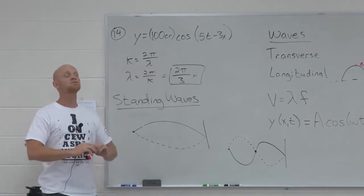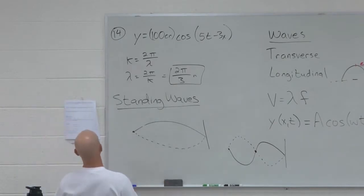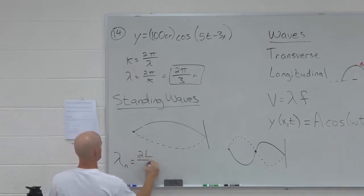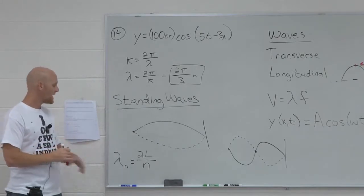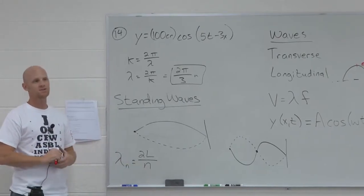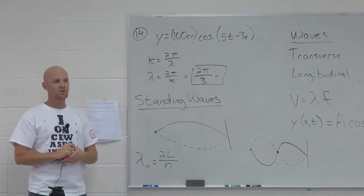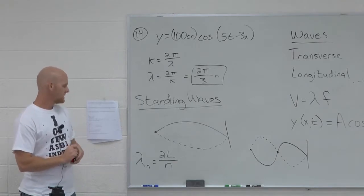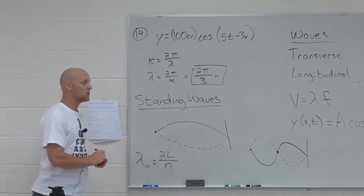There is a big, long derivation to show how you calculate the wavelengths and frequencies of these standing waves — I'm not going to derive it, I'll just give it to you. It's on your handout. The wavelengths for these standing waves is 2L over N, where N can be any integer starting at 1 and working your way up: 1, 2, 3, 4, 5, and so on. N is the number of anti-nodes as well. It starts at 1 — you can't have zero anti-nodes.